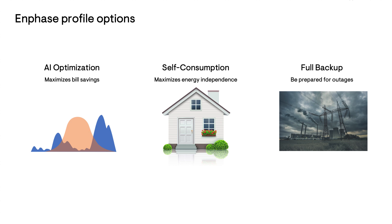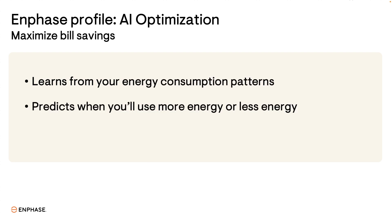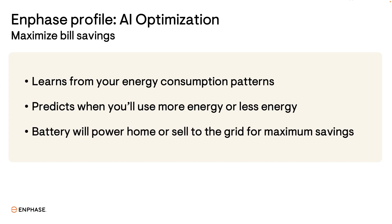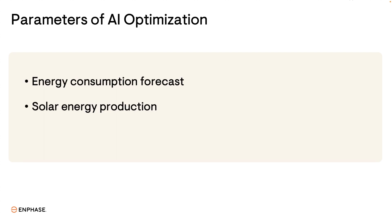AI optimization has replaced the previous system profile of savings mode. What is special about AI optimization is that it learns from your energy consumption patterns and predicts when you'll use more energy or less energy. It then decides whether to use the battery to avoid peak electricity rates or to sell energy to the grid when valuable. Every day AI optimization may operate a little differently depending on how much energy it expects you to use, how much solar energy is produced, and the constantly changing import and export rates.